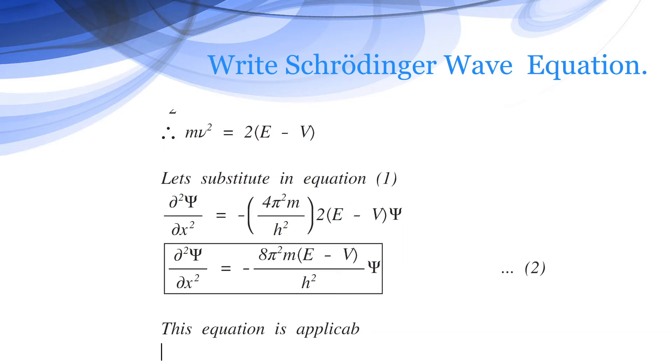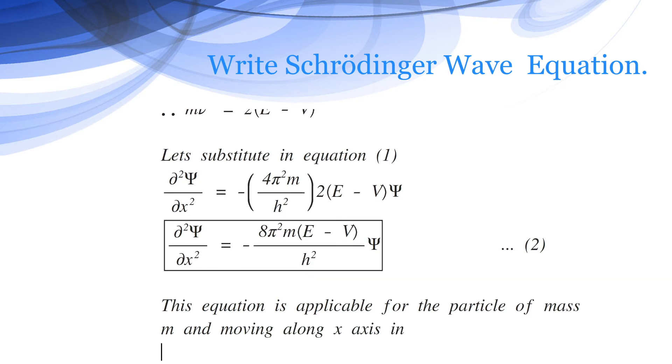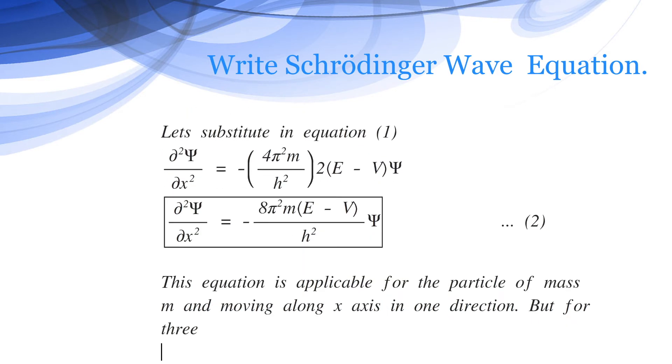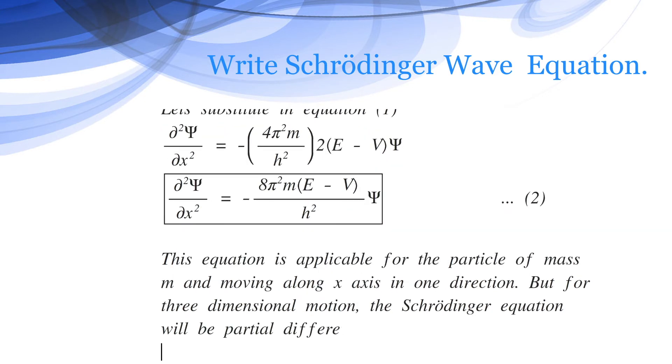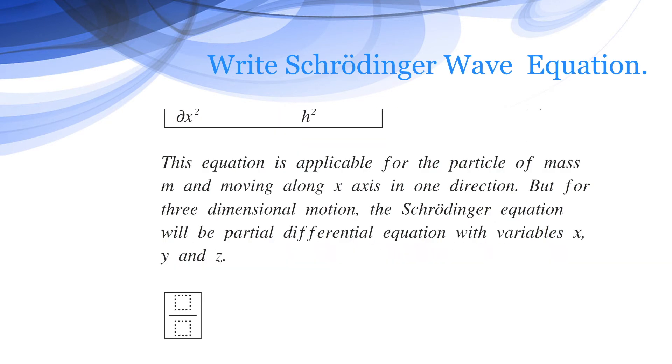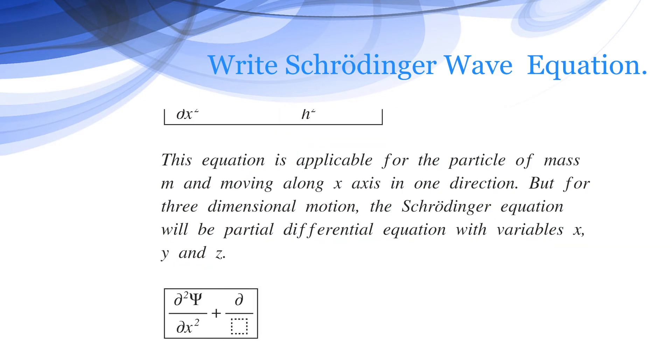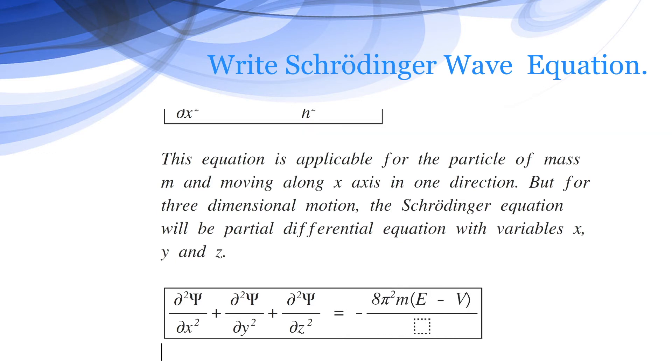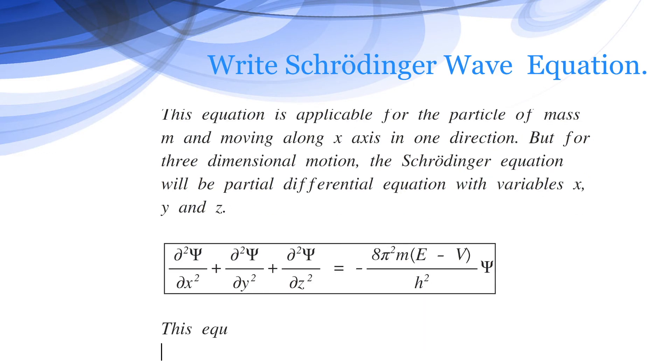This equation is applicable for the particle of mass m moving along the x-axis in one direction. But for three-dimensional motion, Schrödinger equation will be a partial differential equation with variables x, y, and z in all three directions. Therefore, d square psi divided by dx square plus d square psi divided by dy square plus d square psi divided by dz square equals minus 8 pi square m E minus V divided by h square into psi. This equation is known as Schrödinger wave equation.